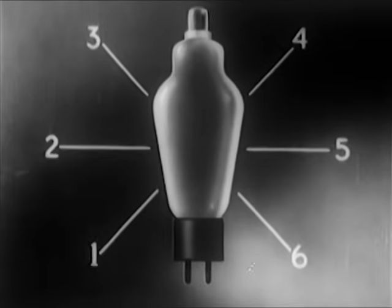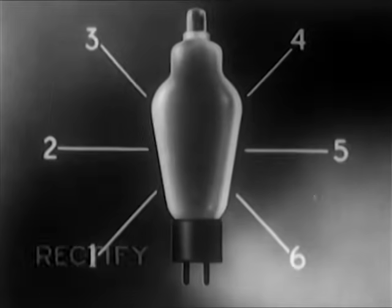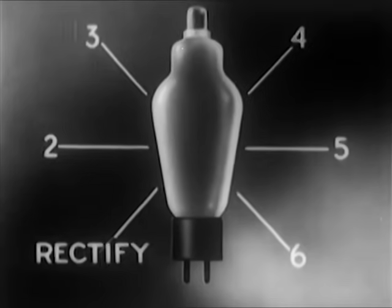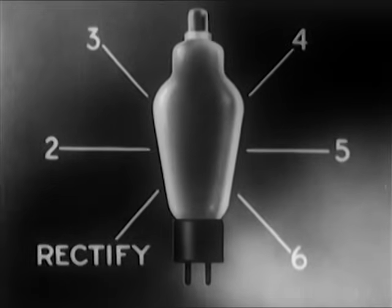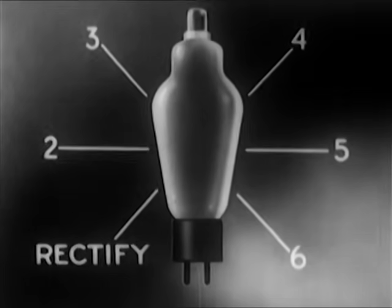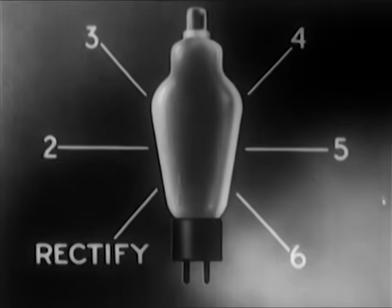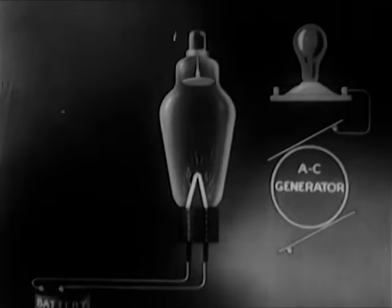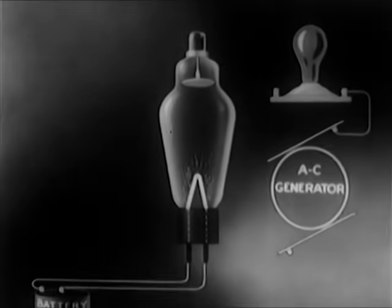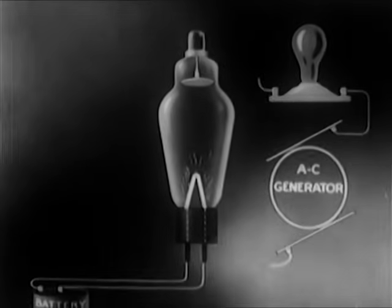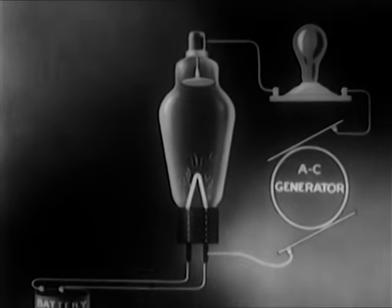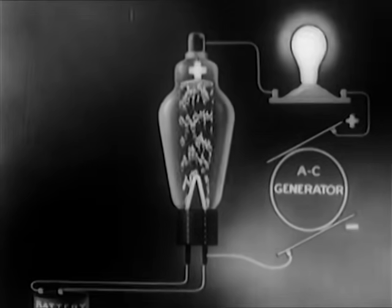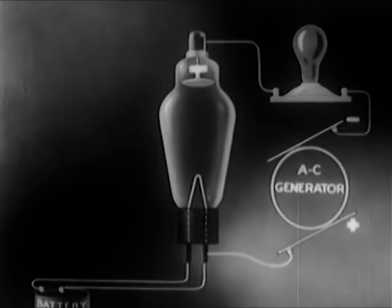In the first place, we can rectify current with it, converting AC to DC. We can do this merely by connecting an electronic tube in series with an AC circuit.